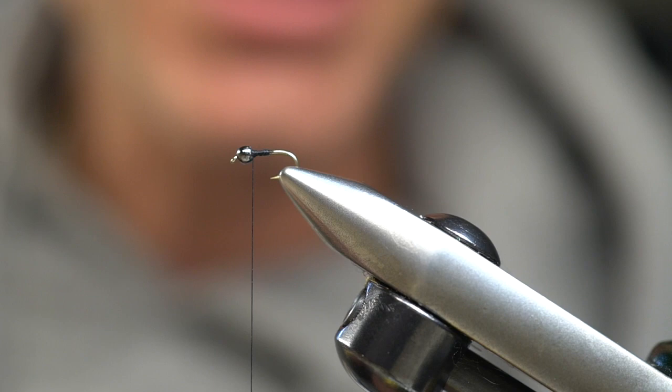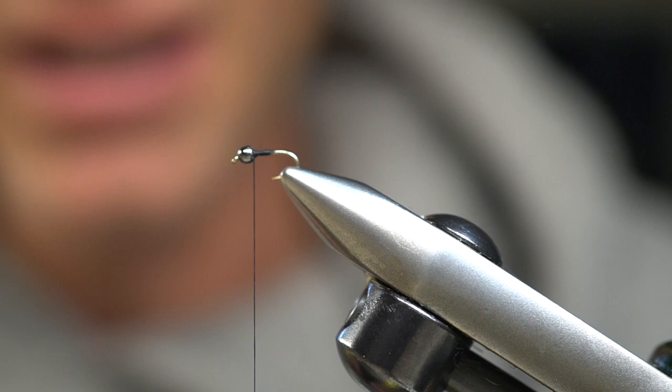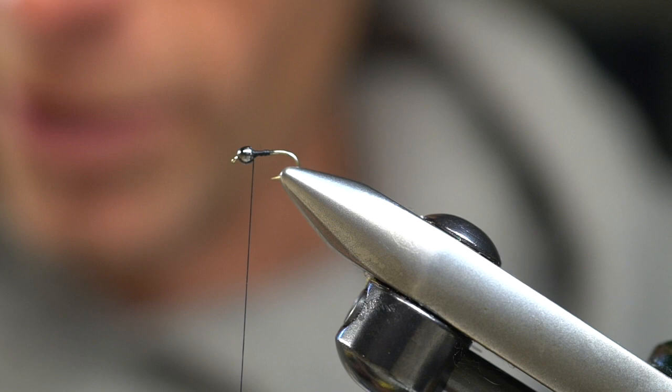To get started we're using a Tiemco 3769 size 16, just a short shank nymph hook with a 2.5mm tungsten bead. Obviously you can use larger, sometimes even smaller flies with bigger or smaller beads as well.